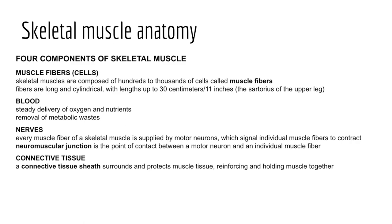To begin the study of muscles in earnest, let's look at the four components of skeletal muscle tissue: muscle fibers, blood, nervous tissue, and connective tissue. Skeletal muscles are composed of hundreds to thousands of muscle cells called muscle fibers. At the gross level, these fibers are long and cylindrical — they can be quite large with lengths up to around 11 inches if we consider the sartorius muscle of the anterior thigh.